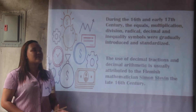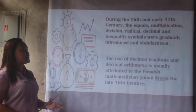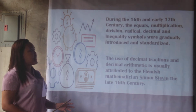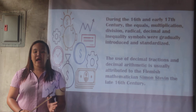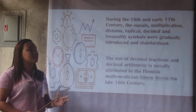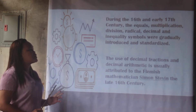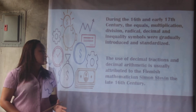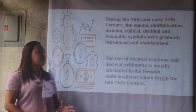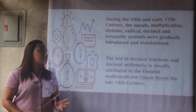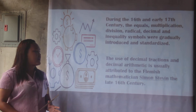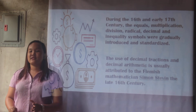During the 16th century and early 17th century, the equals, multiplication, division, radical (roots), decimal, and inequality symbols were gradually introduced and standardized. The use of decimal fractions and decimal arithmetic is usually attributed to the Flemish mathematician Simon Stevin in the late 16th century.